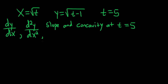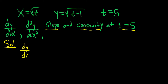In this problem, we're given two parametric equations and we have to find a few things: dy/dx, the second derivative, and then the slope and concavity at the value of the parameter t equals 5. Let's go ahead and work through this. First, let's find dy/dx. The formula for dy/dx is dy/dt divided by dx/dt. It's easy to remember because you can think of it as y over x — dy/dt over dx/dt.